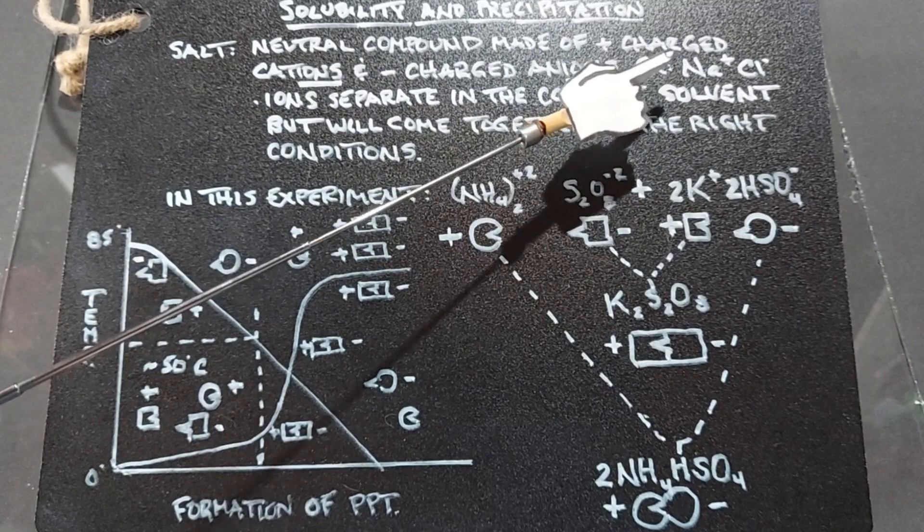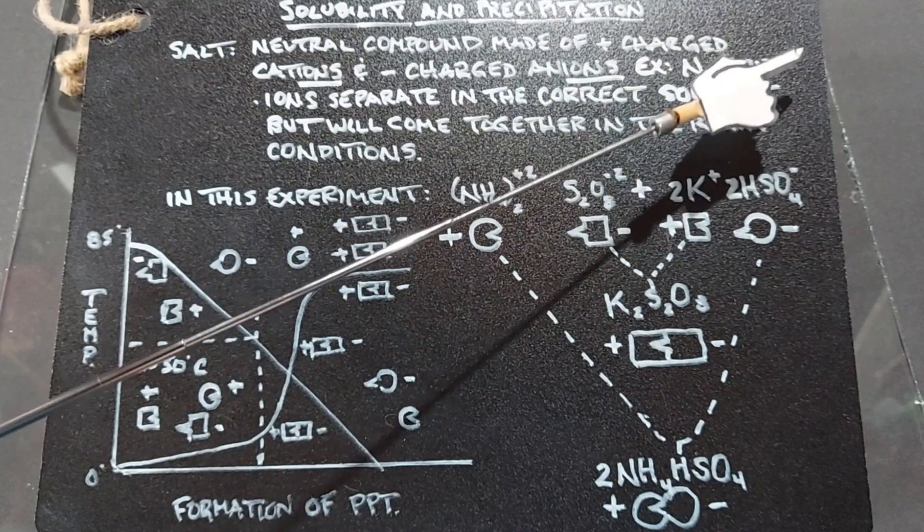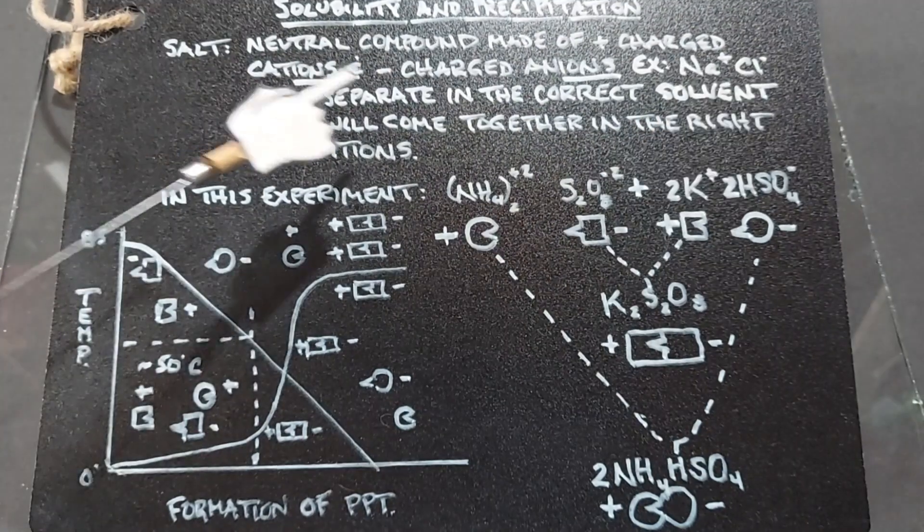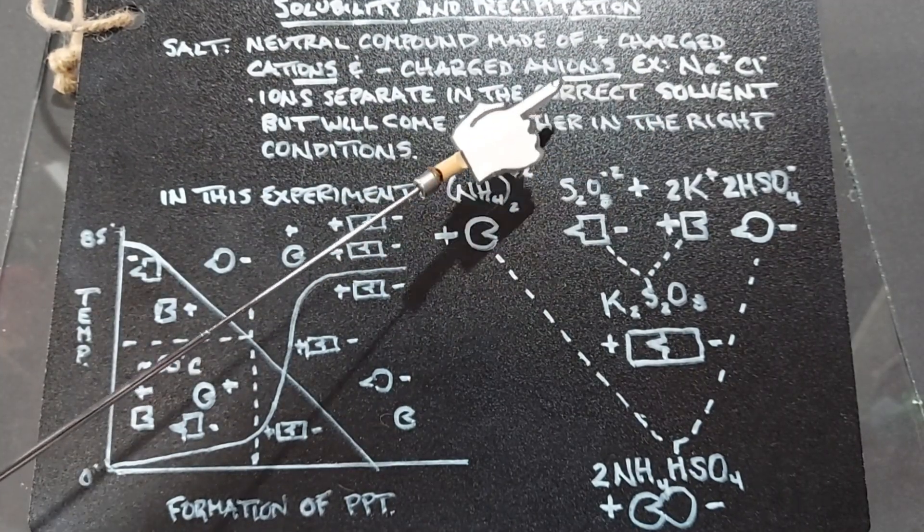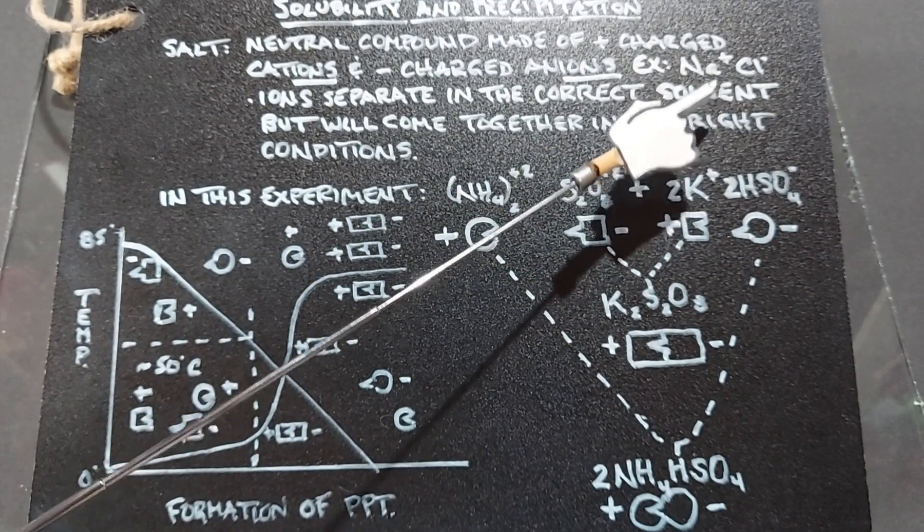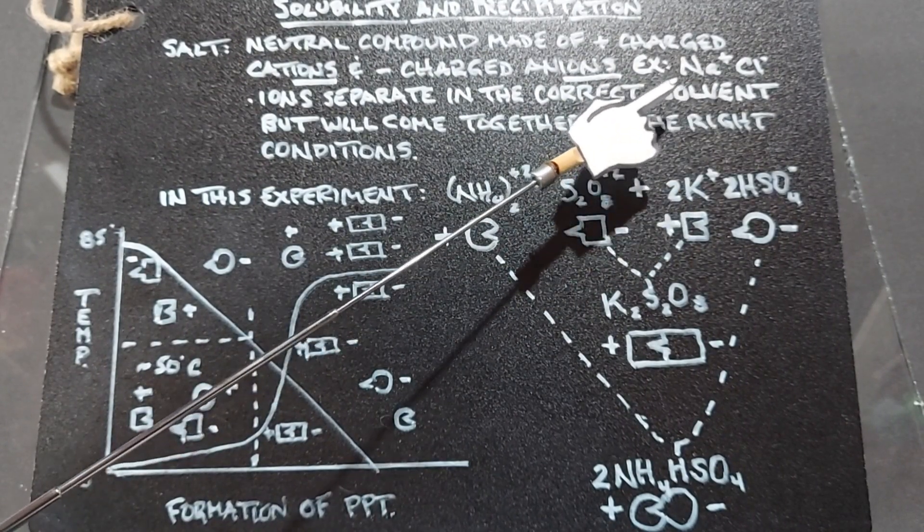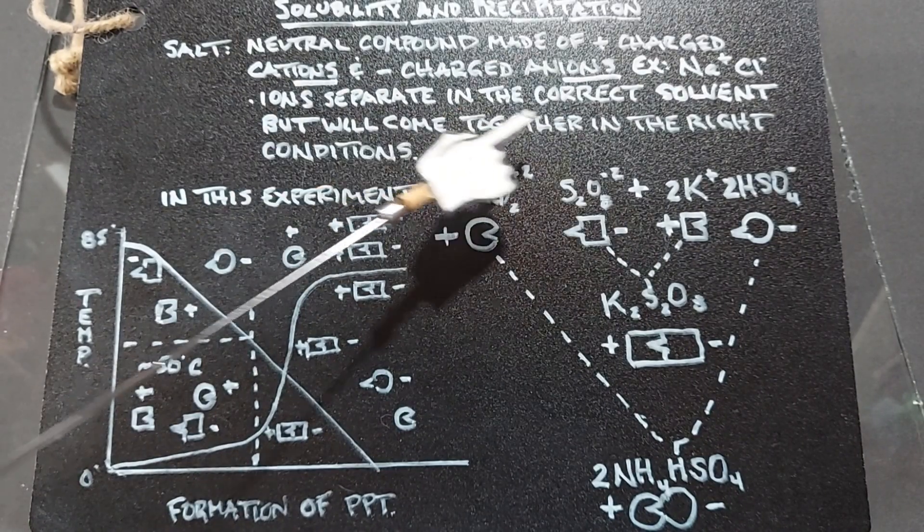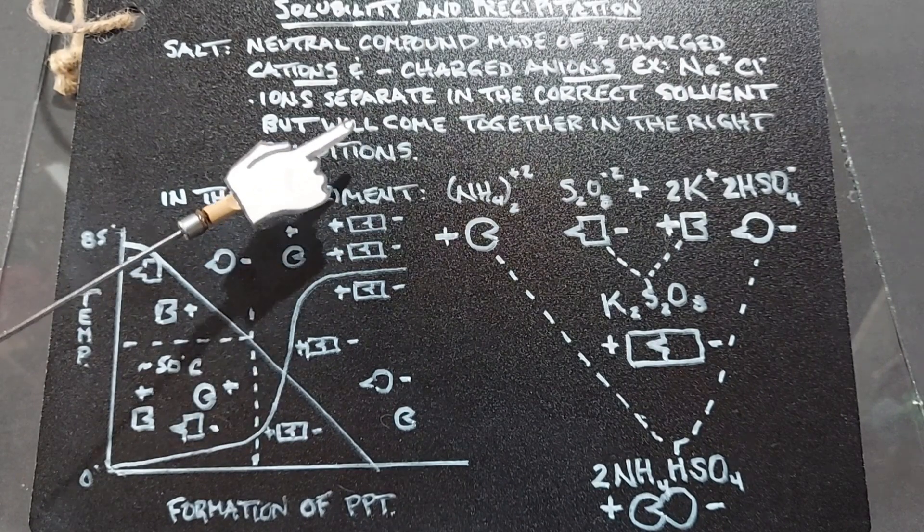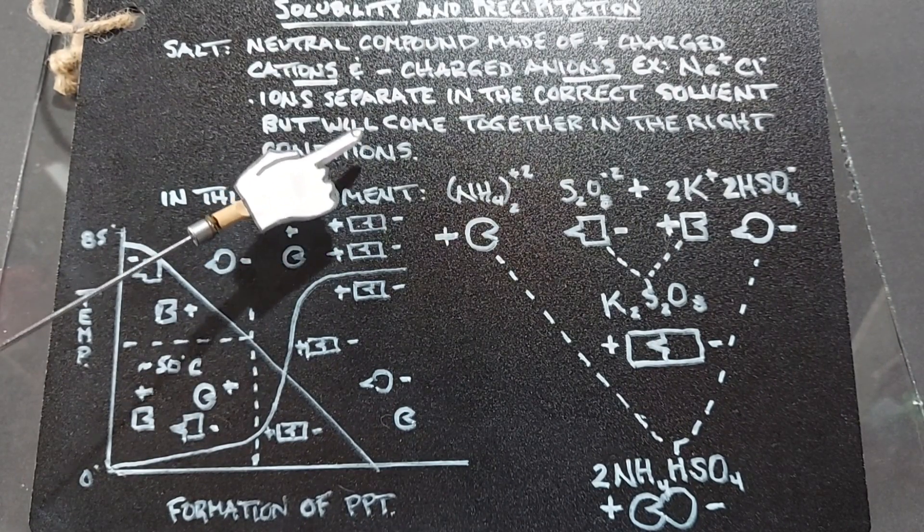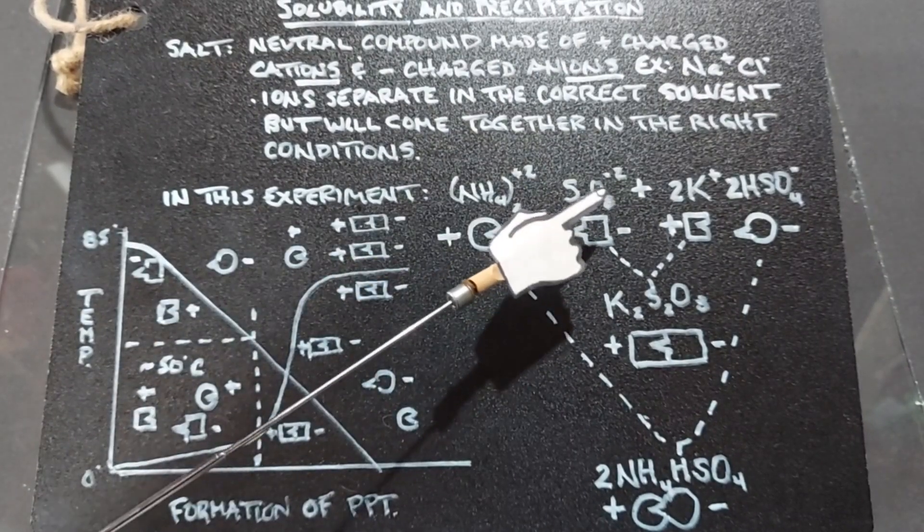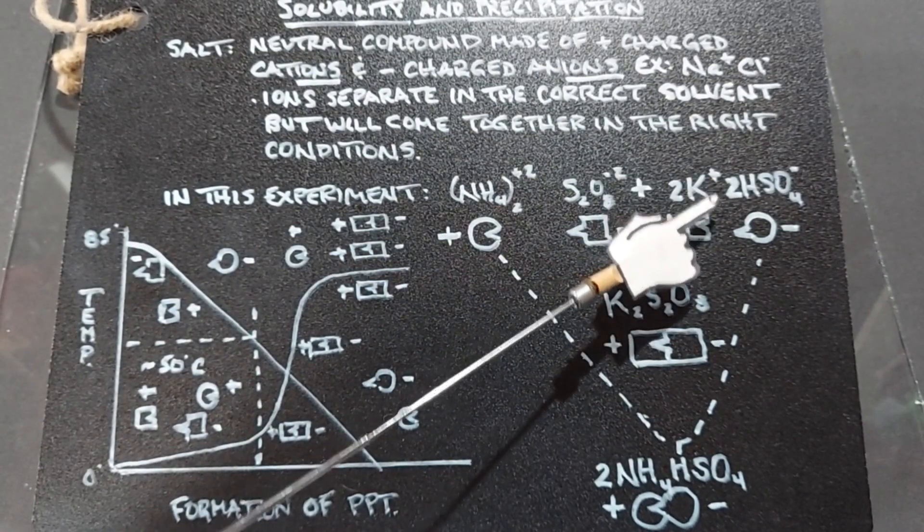The most simplest salt that we can think of is salt, Na+, Cl-. And it's held together by an electrostatic charge. So all salts will come apart because they're made of two ions, a positive and negative, in the correct solvent. So for salt, it's water. Water is the most ubiquitous solvent that exists, but will come together in the right conditions. And these conditions can be one of two things. Typically, it's either temperature or it's by dehydrating the solvent.